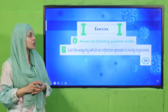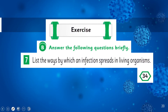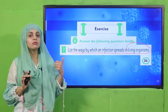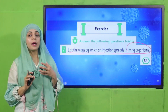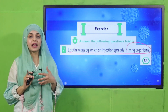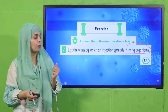Now we move to Exercise B, question number seven on page number 34: List the ways by which an infection spreads in living organisms. You should write the different ways infection spreads — through air, food, water, open wounds, and bites of animals and insects — which can all transmit pathogens into healthy human beings.